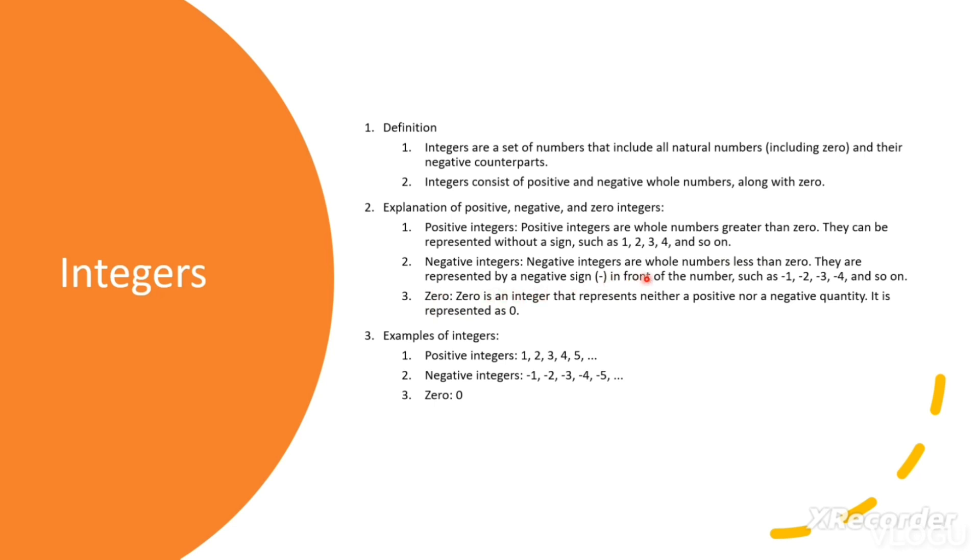Negative integers: Negative integers are whole numbers less than zero. They are represented by a negative sign, minus, in front of numbers such as minus 1, minus 2, minus 3, minus 4, and so on.